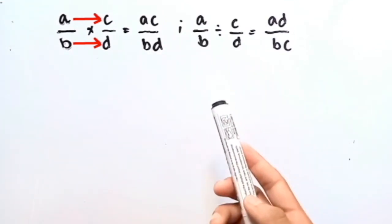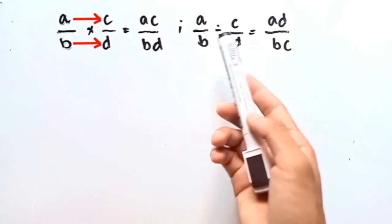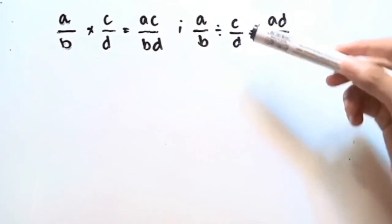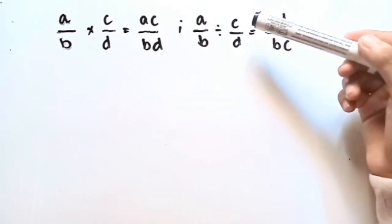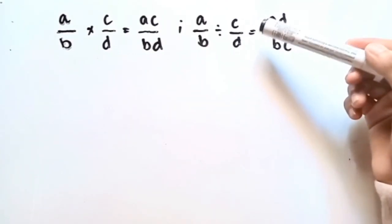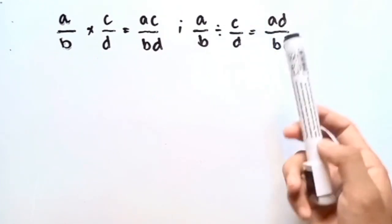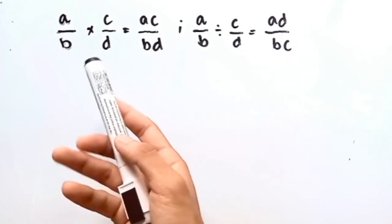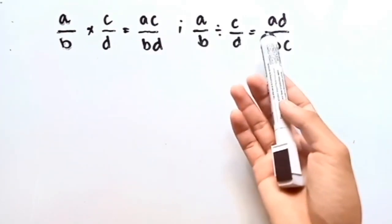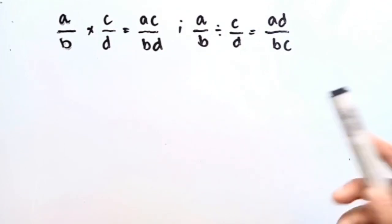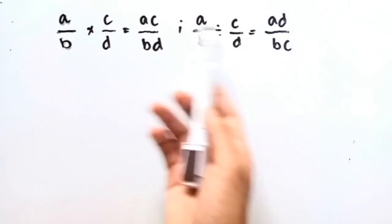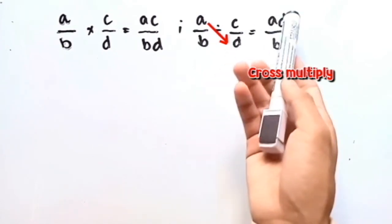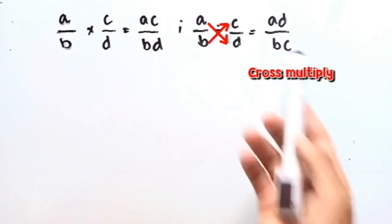And if we're going to divide fractions, which is A over B divided by C over D, if we're going to get the reciprocal of C over D, this will become D over C. Now we can follow the formula for multiplying fractions. That's why this will become AD over BC — so cross multiply: A times D is AD, then B times C is BC.